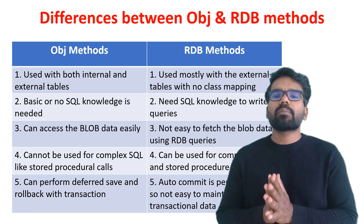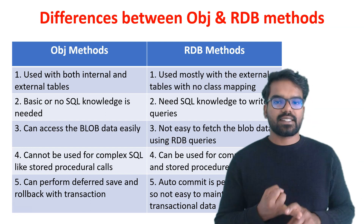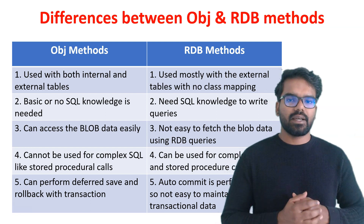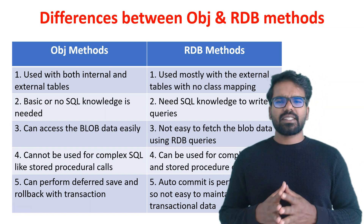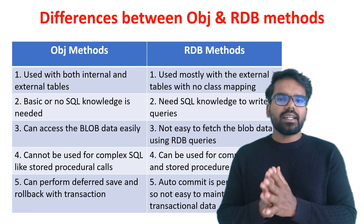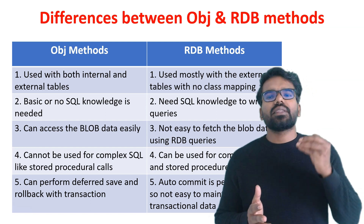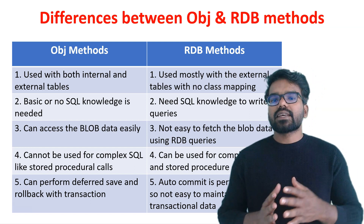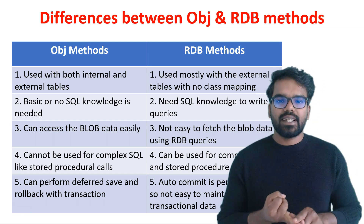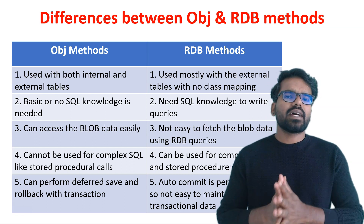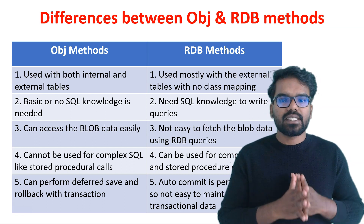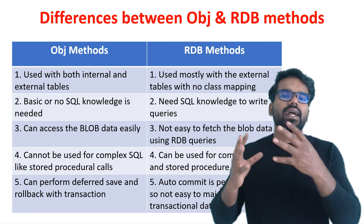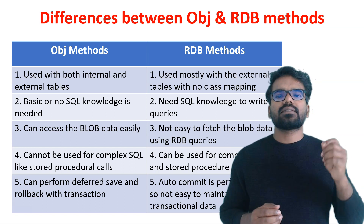The first thing is OBJ methods can work with internal as well as external databases, whereas RDB methods are mostly used with external databases. Let's first understand what internal and external database tables are. The internal database is where you install PEGA. We installed our PEGA personal edition on a local Postgres server, which has the rule schema as well as the data schema. All the tables that are part of the rule schema and data schema can be considered as internal tables. When you create a new table in the data schema and create a class mapping to that table, it is considered an internal table.